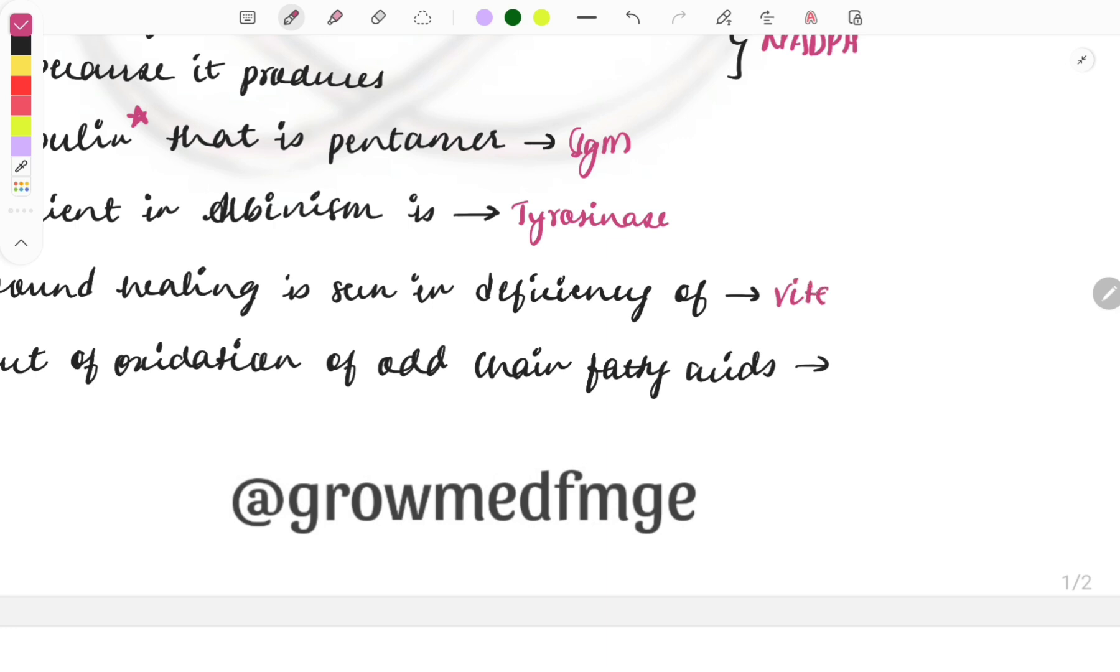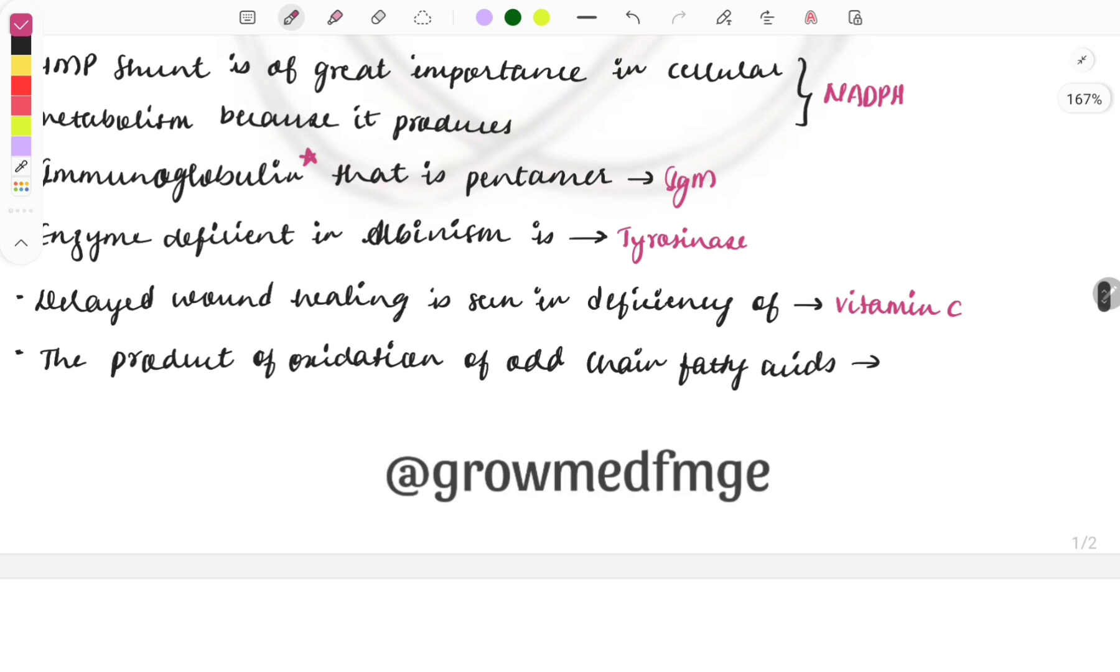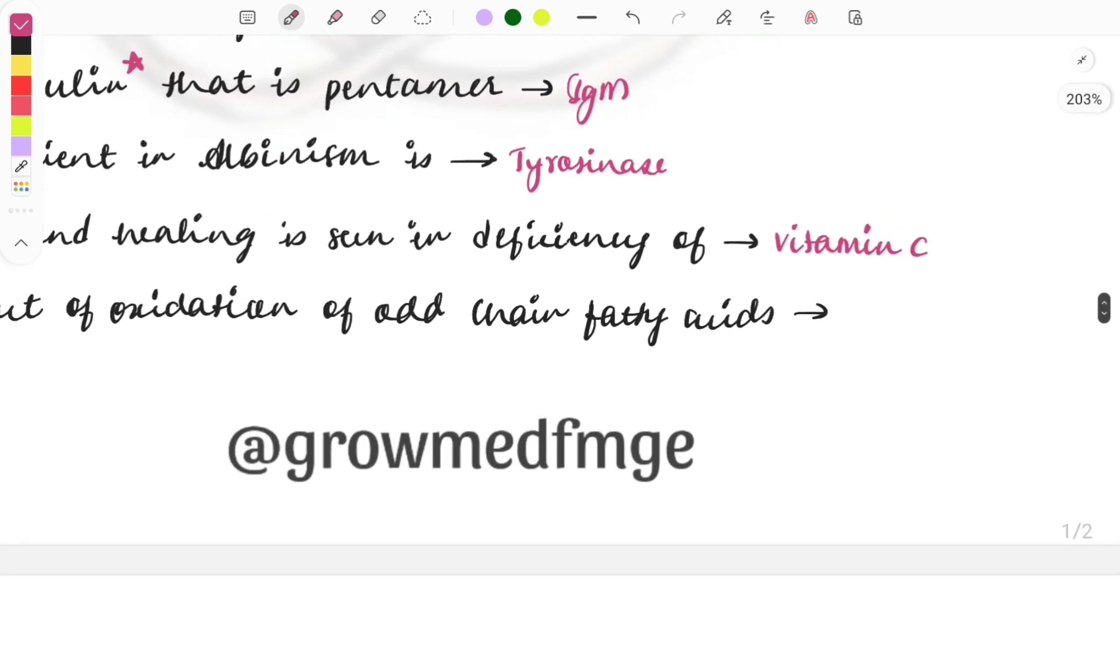Delayed wound healing is seen in deficiency of which vitamin? It is vitamin C, because vitamin C is involved in the post-translational modification of collagen. If there is defect in collagen, then there will be defect in the formation of connective tissue, then it will lead to delayed wound healing.